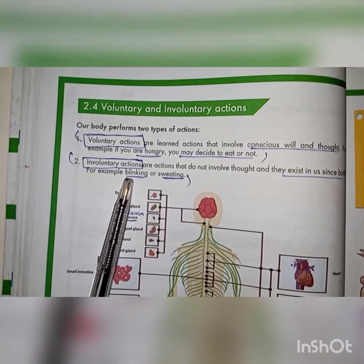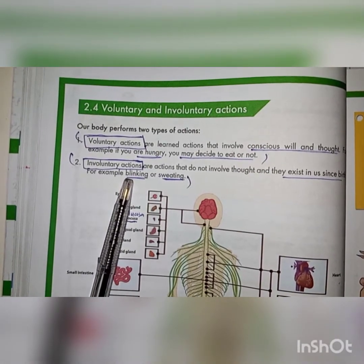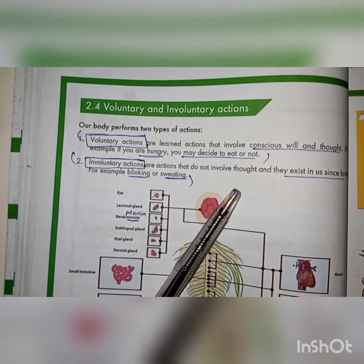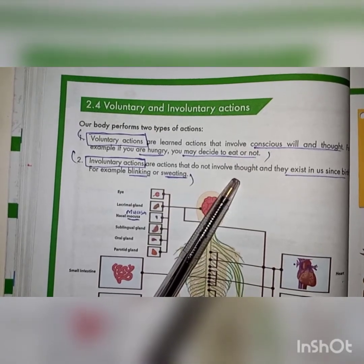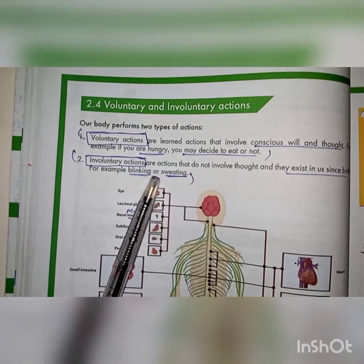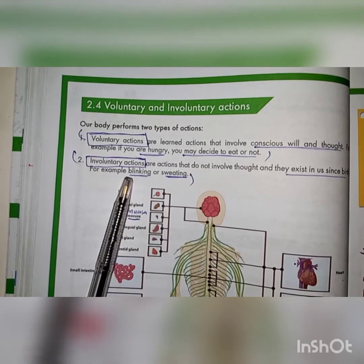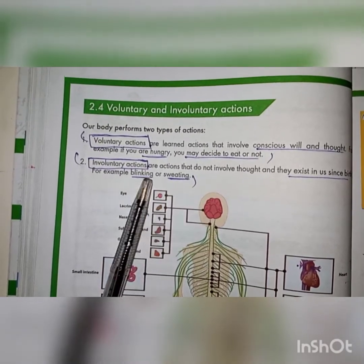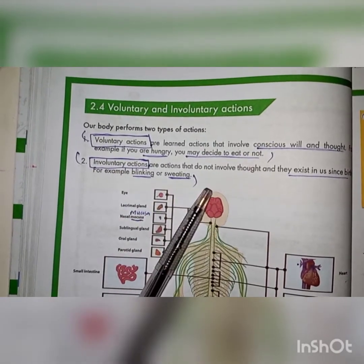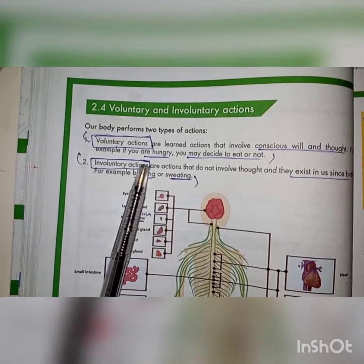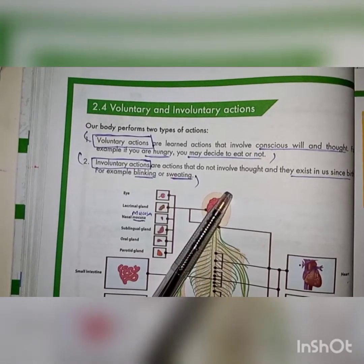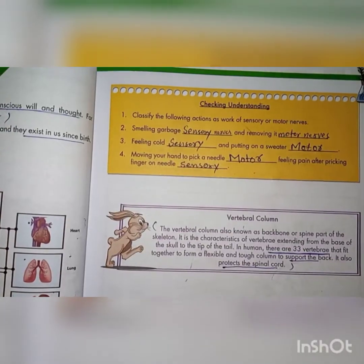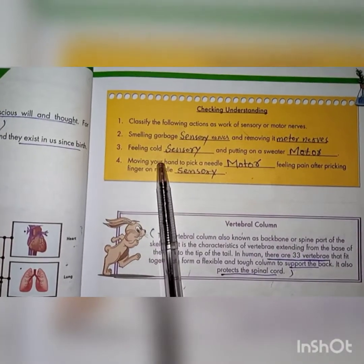Involuntary actions are those which are not under our control — the body controls them itself. For example, blinking or sweating. These involuntary processes are not something you can control even if you want to.